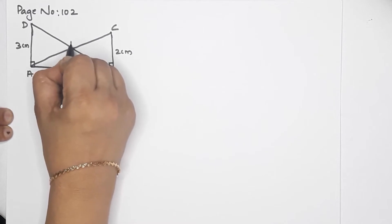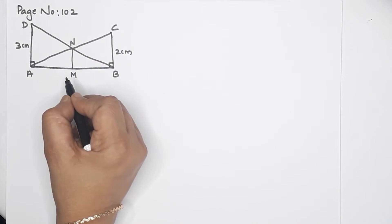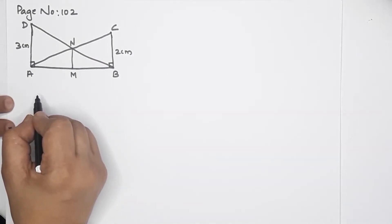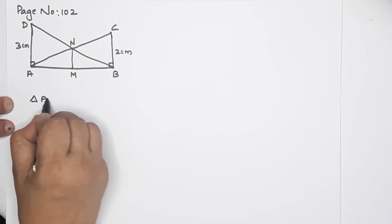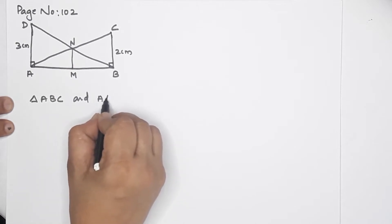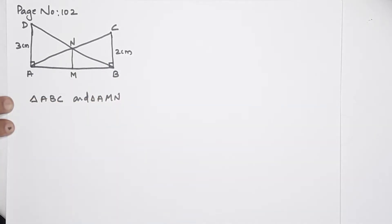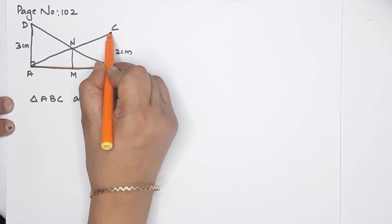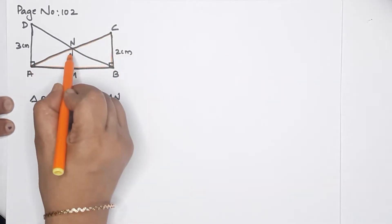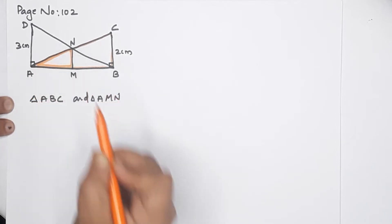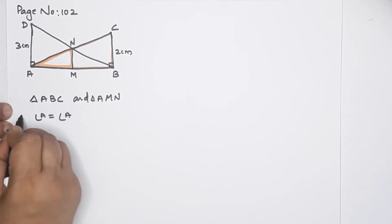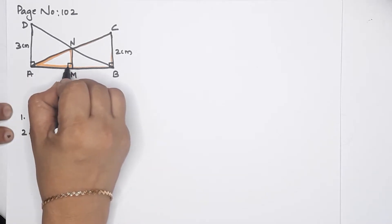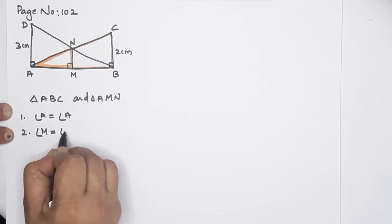This is M and N — these are all the names. First, we find it. M is the height. We use AA similarity. Triangle A, M, N and triangle A, B, C. I will consider these two triangles. Angle A is equal to angle A — common angle. Second point: this is 90 degrees, so angle M is equal to angle B, equal to 90 degrees.